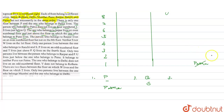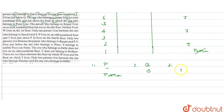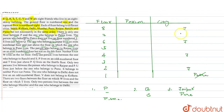Jaipur will be on even number floors — we write J for all even floor possibilities. Jaipur will be just above Pune. Next, the person who belongs to Raipur lives on an even number floor but not on the 8th floor, so Raipur cannot be on floor 8 — we cross that out. The possibilities remain on the other even floors. Neither S nor W lives on the first floor, so S and W are not on floor 1.